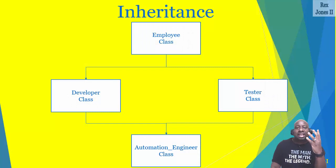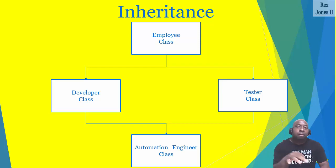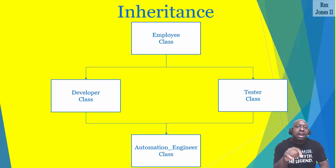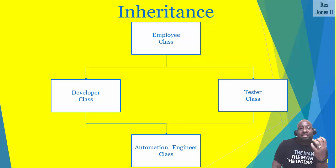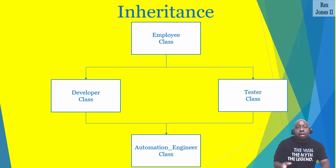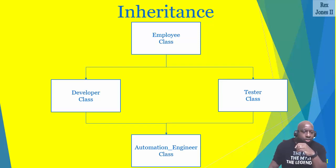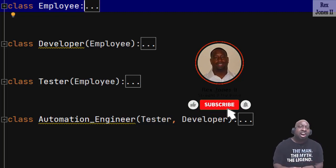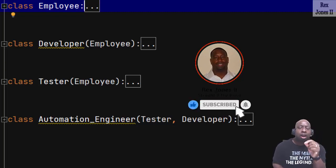Polymorphism is related to inheritance. In this diagram there are four classes — Employee is the parent while Developer and Tester are the child classes. From the previous session we saw how the Automation Engineer class inherited two classes: Developer and Tester. When it comes to polymorphism, the Automation Engineer class and both parent classes maintain the capacity to take on many forms.